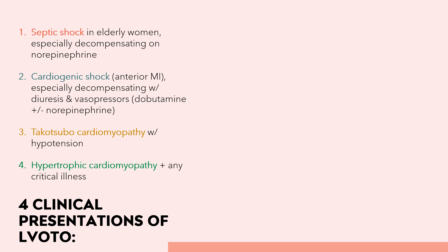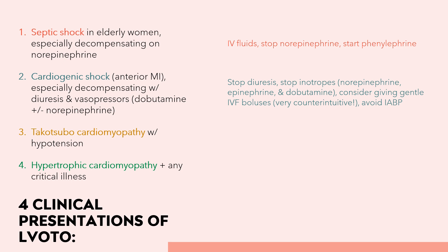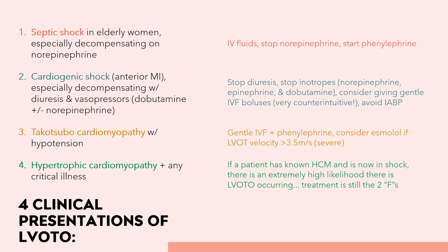Going back to our four clinical presentations: in the first case (septic shock), give more IV fluids, stop the norepinephrine, and start phenylephrine or vasopressin. In the second case (cardiogenic shock), stop diuresis, stop inotropes such as norepinephrine, epinephrine, and dobutamine, consider gentle IV fluid boluses — counterintuitive for cardiogenic shock — and avoid an intra-aortic balloon pump. In the third case (Takotsubo), give gentle fluids and phenylephrine. In the patient with HOCM in shock, there is an extremely high likelihood of LVOTO, and the treatment is still the two Fs.